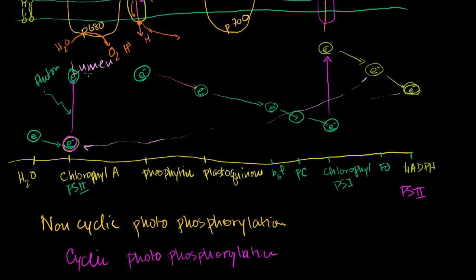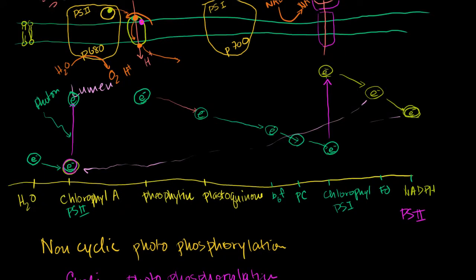The electron gets excited in photosystem I, goes from molecule to molecule through lower energy states, hydrogen gets pumped into the lumen, gets excited again in photosystem I, then enters lower and lower energy states, but then ends up again in photosystem II. That is cyclic photophosphorylation. So you can imagine in this situation, since the electron never ends up at NAD+, you don't end up producing NADPH.